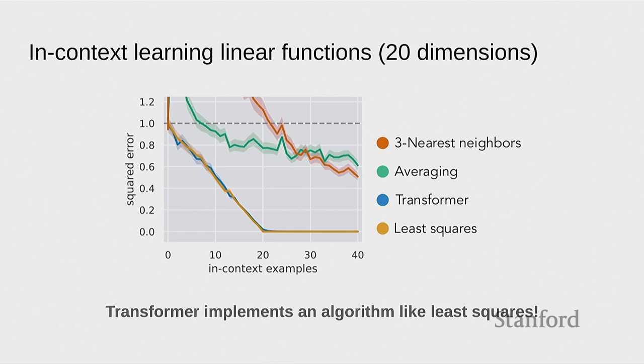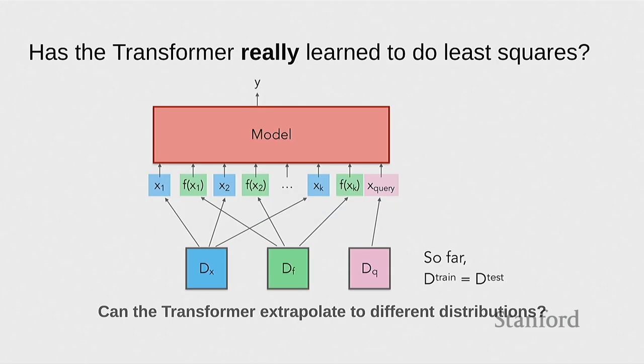So the transformer seems to be mimicking the behavior of the optimal algorithm — least squares. This was pretty cool, but you might still be suspicious. Maybe it just saw enough examples and memorized all possible linear functions. If you do the math, there are a lot of linear functions — even epsilon-close, it's exponential in 20, which is pretty big. So it's definitely not seeing all the linear functions.